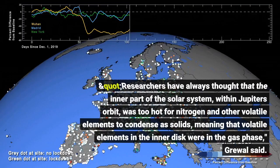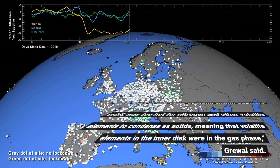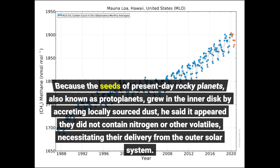Researchers have always thought that the inner part of the solar system, within Jupiter's orbit, was too hot for nitrogen and other volatile elements to condense as solids, meaning that volatile elements in the inner disk were in the gas phase, Grawal said. Because the seeds of present-day rocky planets, also known as protoplanets, grew in the inner disk by accreting locally sourced dust, it appeared they did not contain nitrogen or other volatiles, necessitating their delivery from the outer solar system.